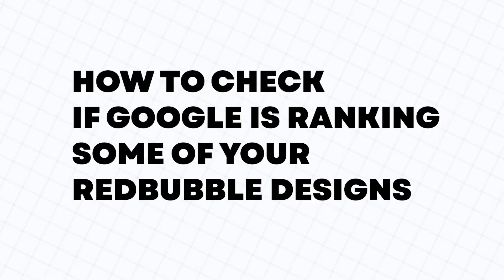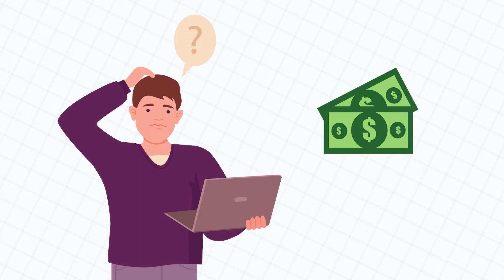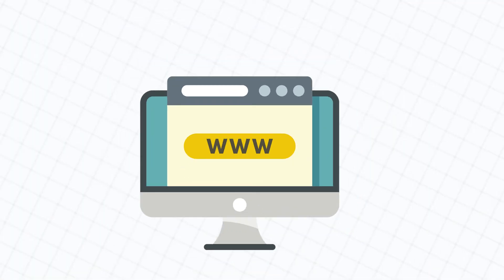If you already have a similar mindset, then you probably want to know how to check if Google is ranking some of your Redbubble designs. And here comes a little complication. I assume you don't have $100 per month to use sophisticated SEO tools like Ahrefs and SEMrush, and using free methods will not show you how high your designs are ranking. The issue is that you need to verify ownership of the domain or subdomain — in this case, your shop URL — to see the keyword rankings, and that is not possible.